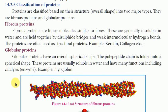Globular proteins have a spherical, round shape. The polypeptide chain is folded into a spherical shape. These proteins are usually soluble in water and have many functions including catalysis. Globular proteins act as enzymes.